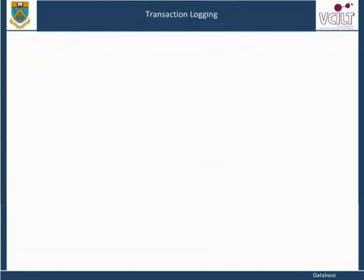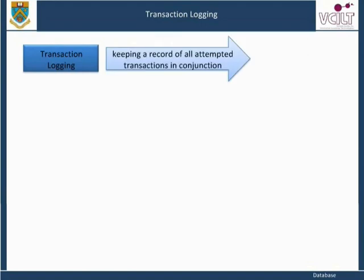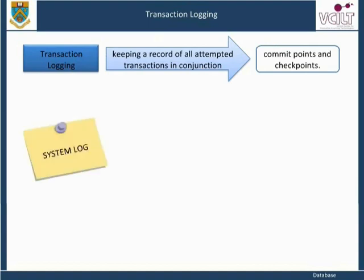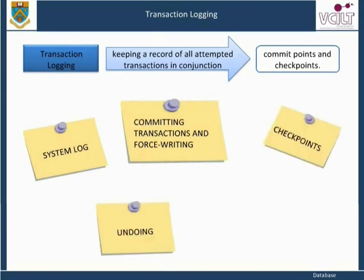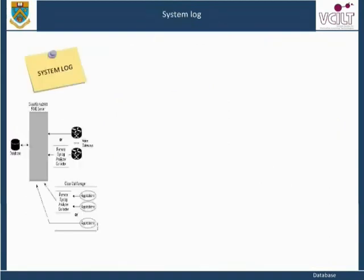Transaction logging consists of keeping a record of all attempted transactions in conjunction with the use of commit points and checkpoints. The recovery manager overcomes many of the potential problems of transaction failure by a variety of techniques. Many of these are heavily dependent upon the existence of a special file known as a system log, or simply log.